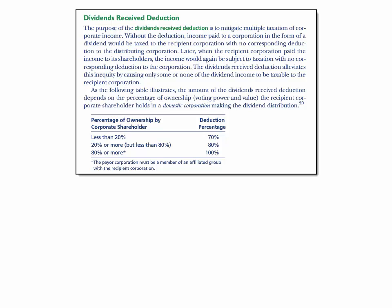The dividend received deduction alleviates this inequity by causing some, or sometimes none, of the dividend income to be taxable to the recipient corporation. We'll go through this example, but here are typical percentages that you see. This relates to the percentage the recipient corporate shareholder holds in a domestic corporation making the dividend distribution.